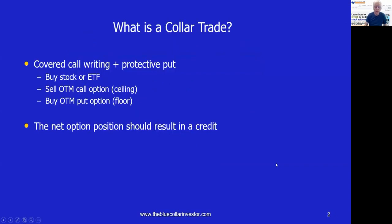Let's launch this podcast by first defining what is a collar trade. A collar trade is covered call writing plus a protective put. We first purchase a stock or an exchange-traded fund — that gives us our covered or protected position. We then sell an out-of-the-money call option with a strike price higher than current market value. That establishes a ceiling on the trade, so if the price of the stock moves from current market value up to the out-of-the-money call strike, we could participate in that appreciation, but not beyond. Therefore, the call strike represents the ceiling of the trade.